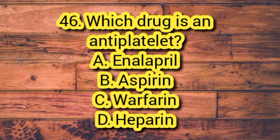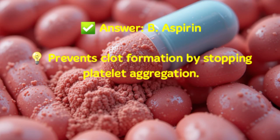Question 46. Which drug is an antiplatelet? A. Enalapril. B. Aspirin. C. Warfarin. D. Heparin. Answer: B. Aspirin. It prevents clot formation by stopping platelet aggregation.